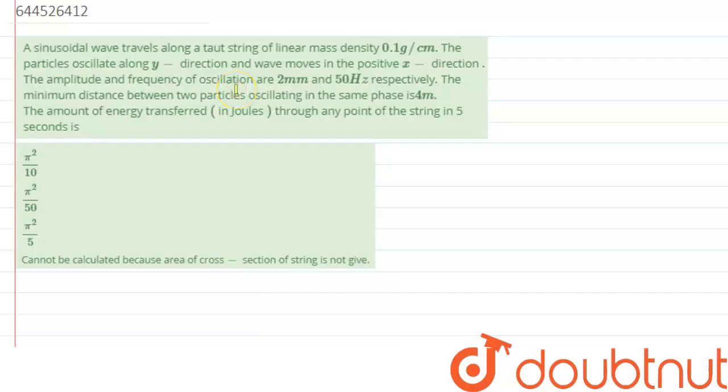Hi everyone, so we are given with a question which says, a sinusoidal wave travels along a taut string of linear mass density 0.1 g per centimeter. The particle oscillates along y direction and wave moves in the positive x direction. The amplitude and frequency of oscillation are 2 mm and 50 Hz respectively.